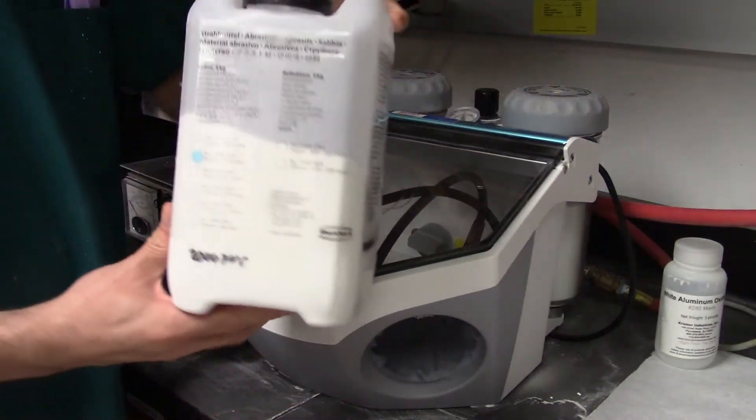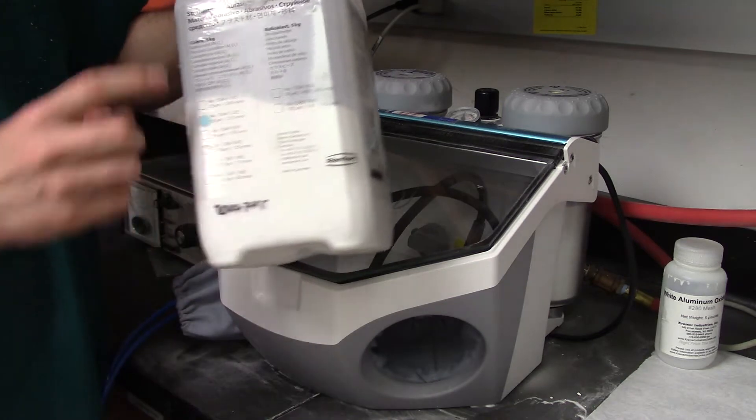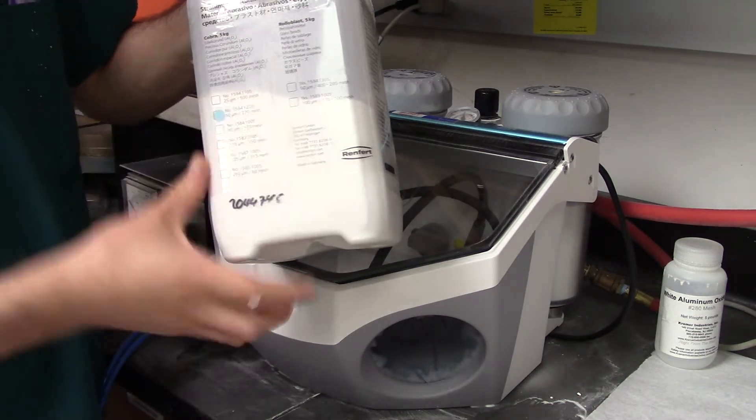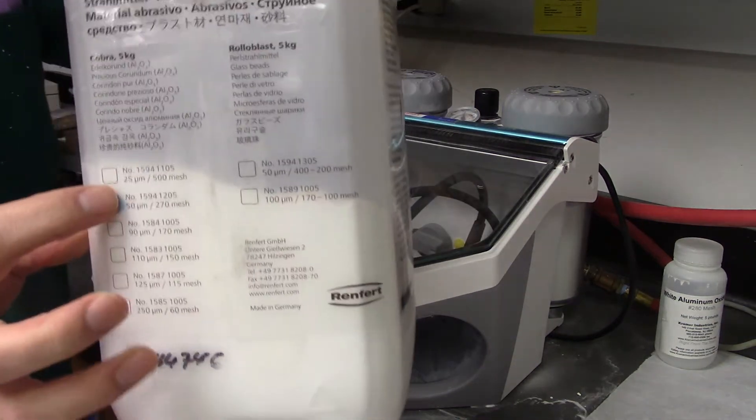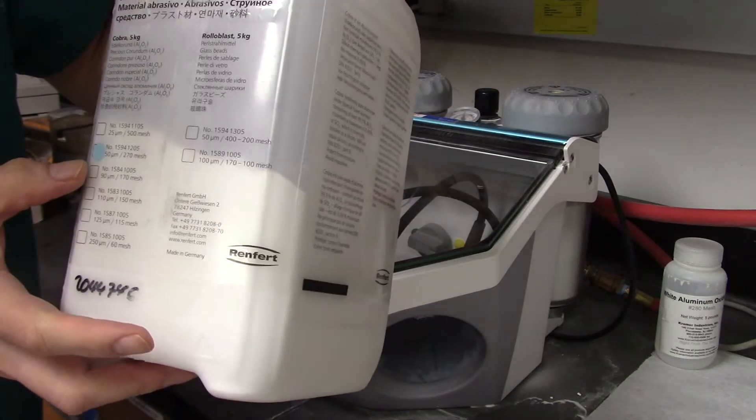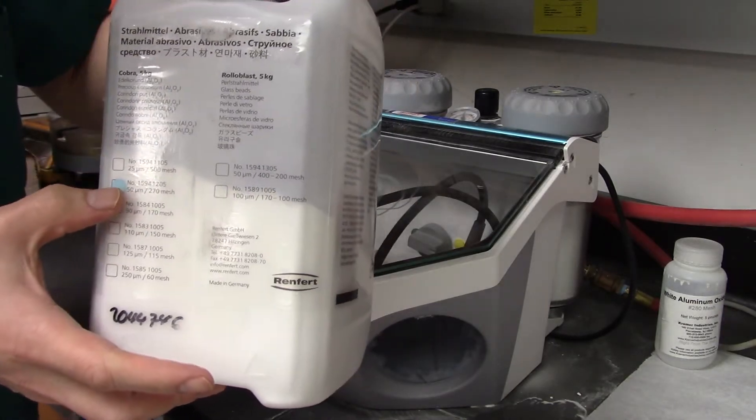We've got these jugs here. So this is a jug. And this jug, it says Cobra. Cobra is the alumina particles. You can maybe see right there, it's marked that this is 50 micron, or this one here, 50 micron alumina.